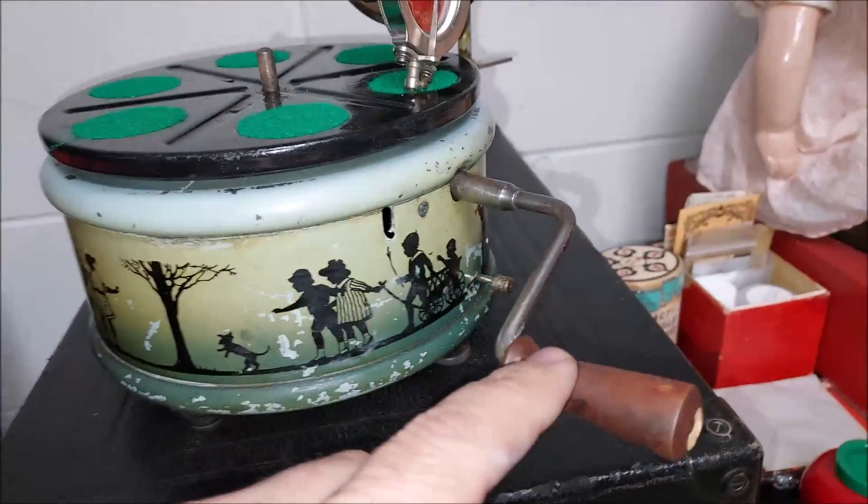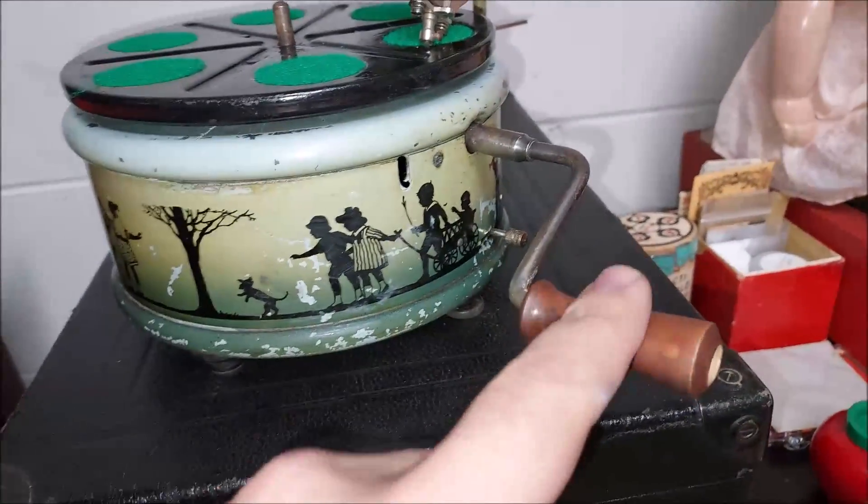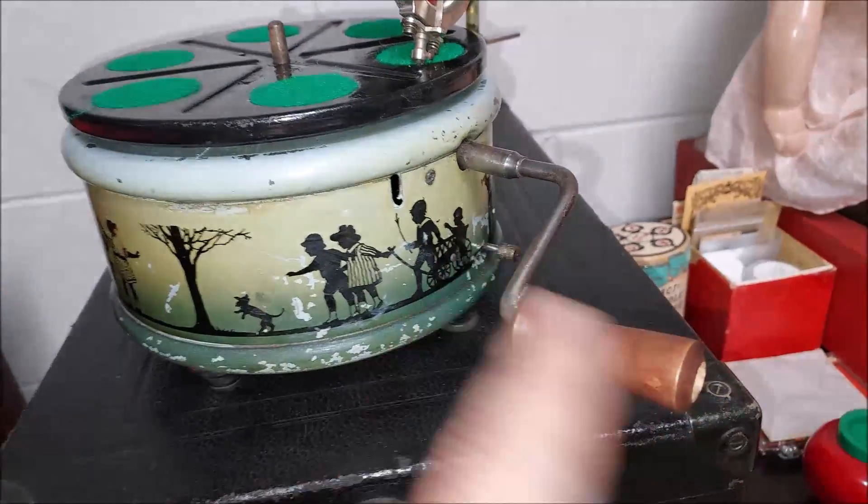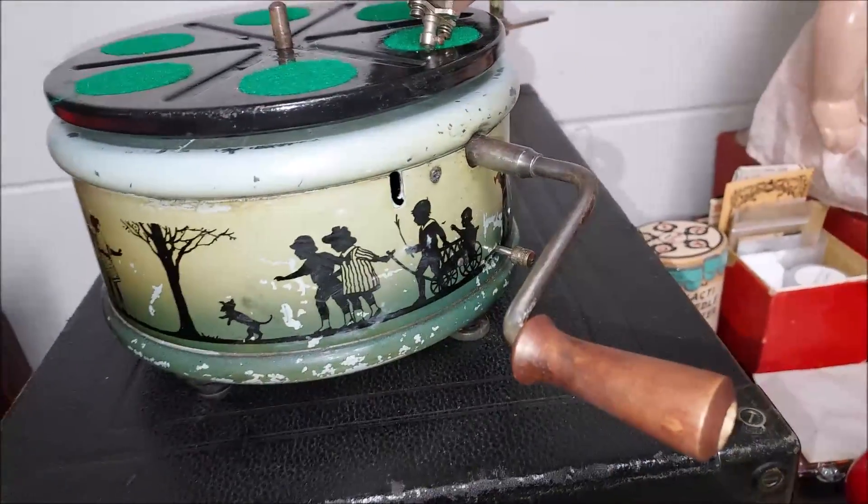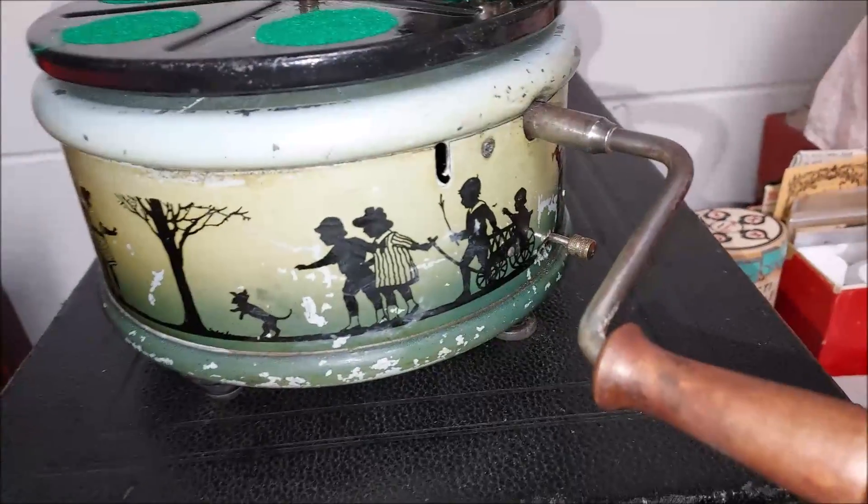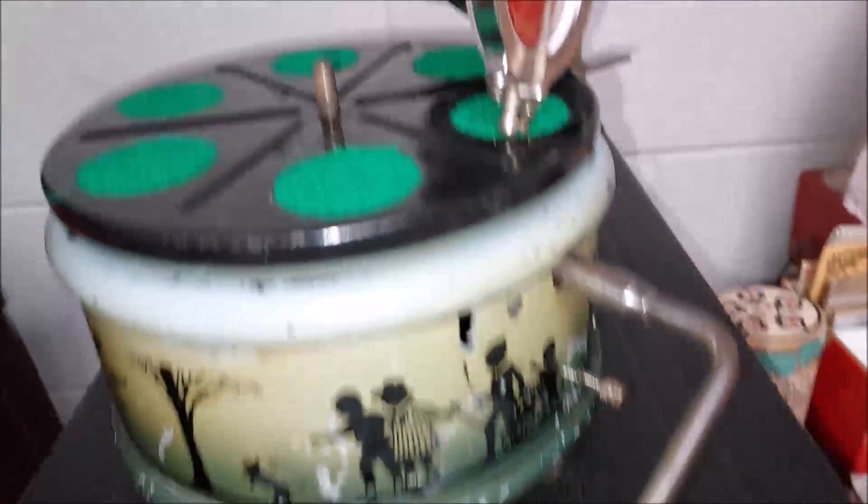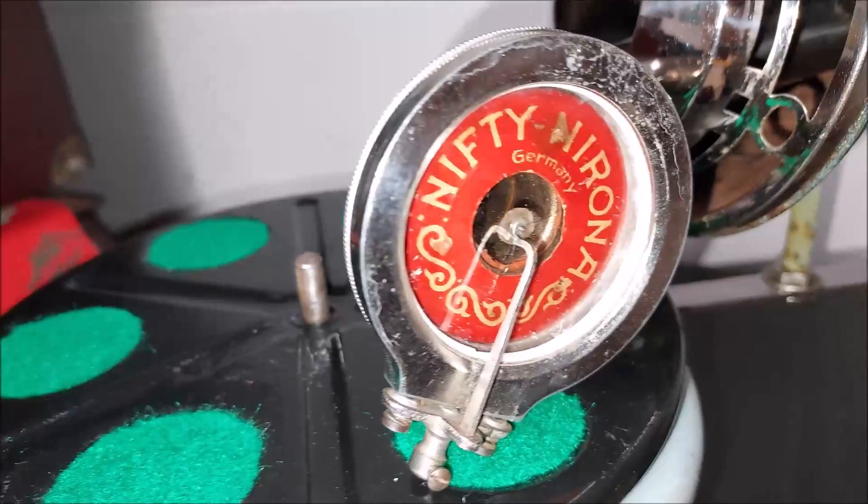I also did a little stain on this crank handle. This was basically bleach white when I got it. It was totally unstained. I don't know what happened to it, but I rebuilt the reproducer.